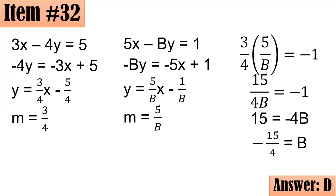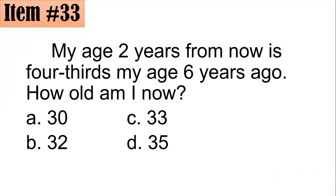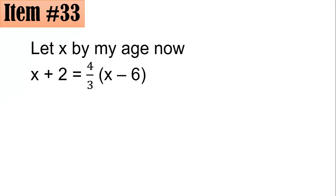The steps here are quite long but if you're good enough you could make it shorter. Item 33: My age two years from now is four-thirds my age six years ago. How old am I now — 30, 32, 33, or 35? If x is my age now, then my age two years from now will be x plus 2.